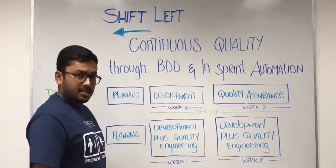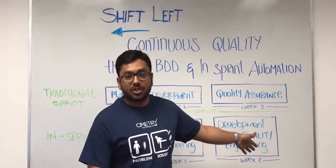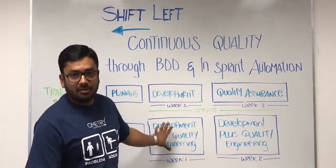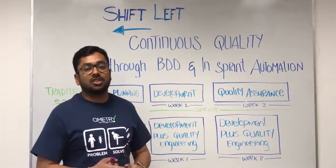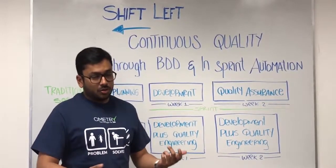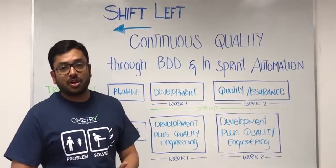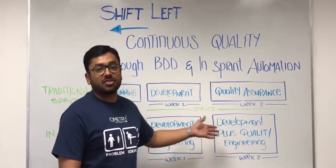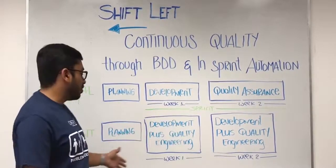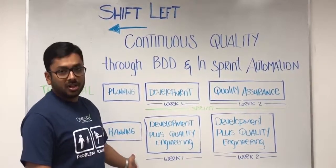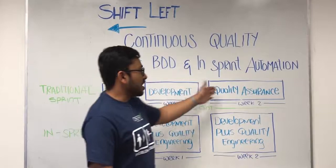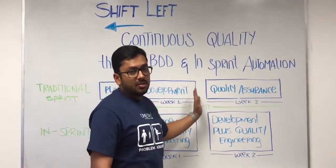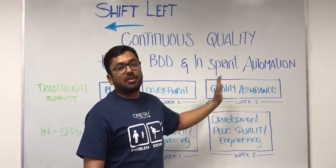Once the planning is done, say again we have two-week sprints. Here you can see we are not only doing the development activities, but the quality engineering team — which includes the manual testing team as well as the automation team — is working on QA activities right from day one of the sprint, rather than the staggered approach of the traditional sprint where the QA sprint is staggered with the development sprint by one week.